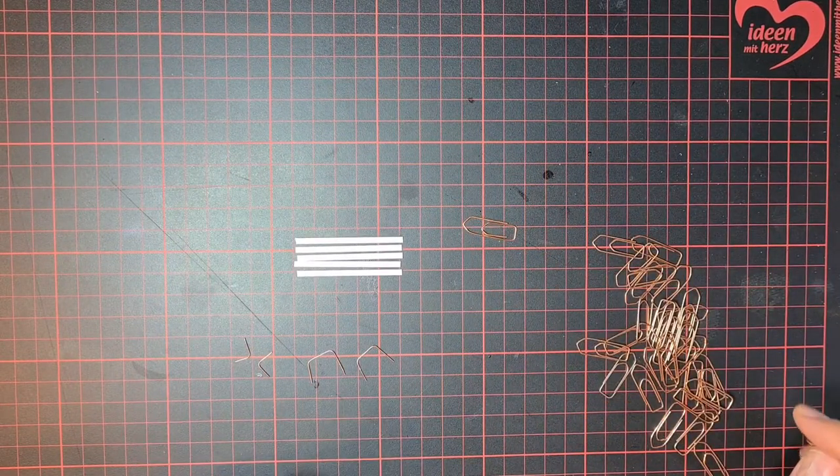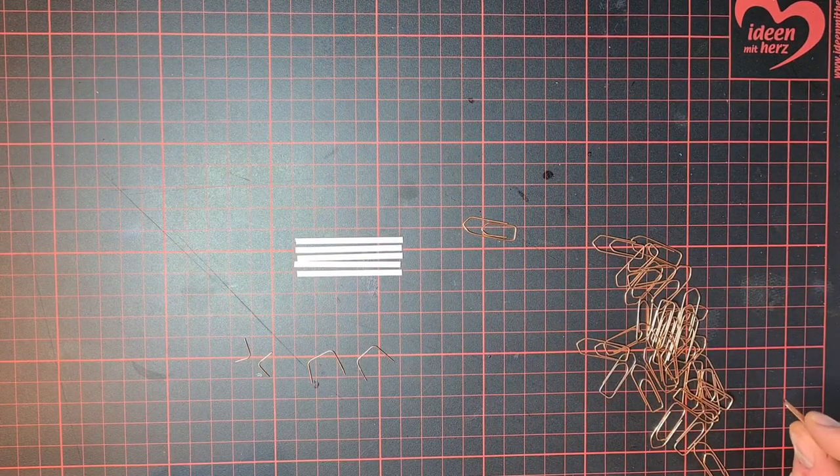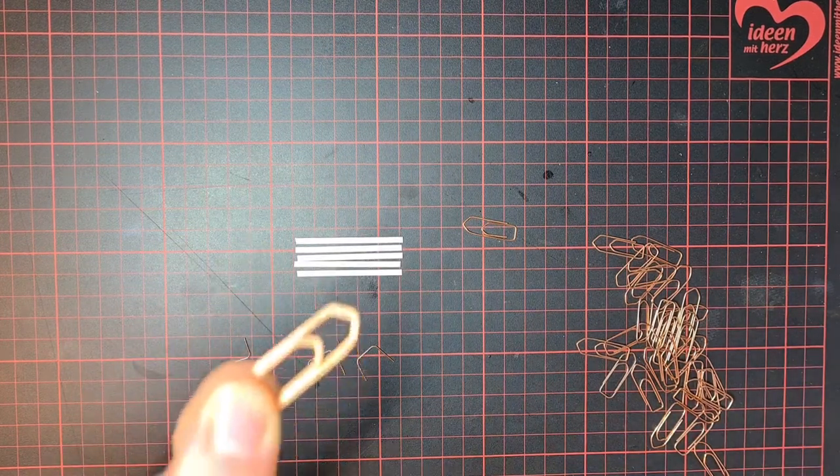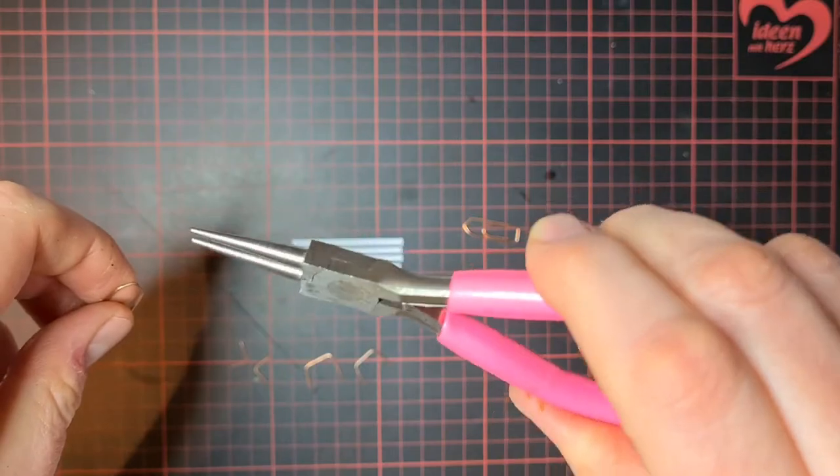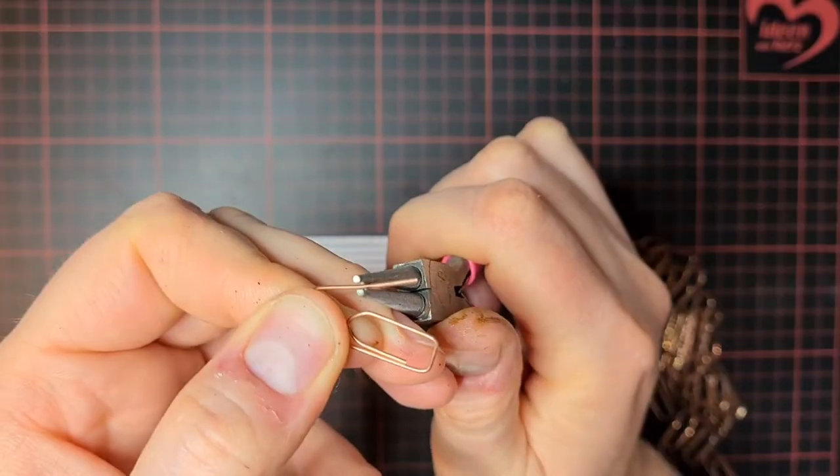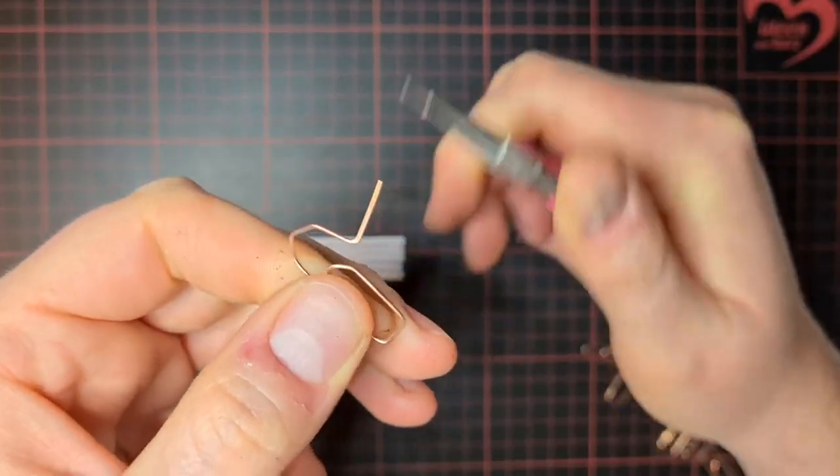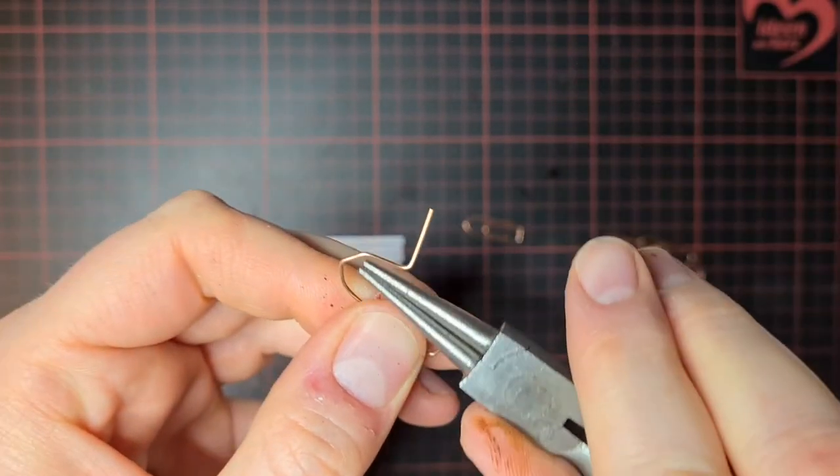Now we need these four pieces of wire. For this I'm using these paper clips. For bending I'm using this tool. First of all, a 90 degree angle, and we cut off here.